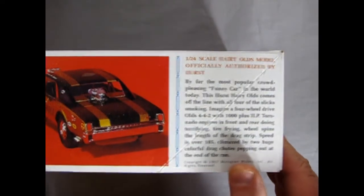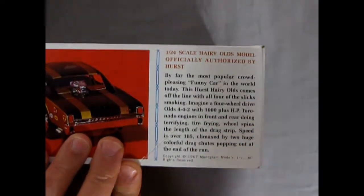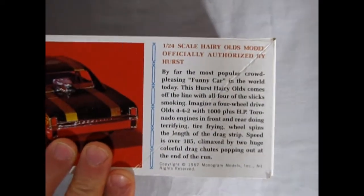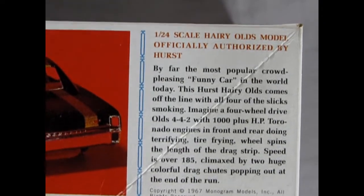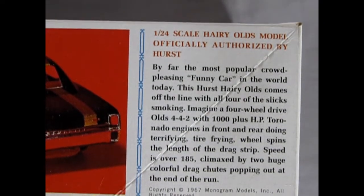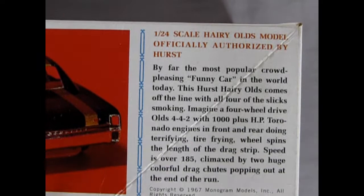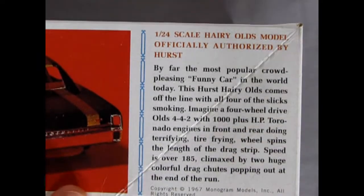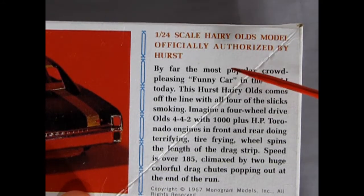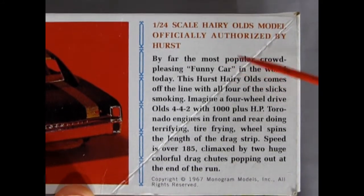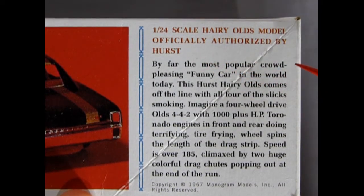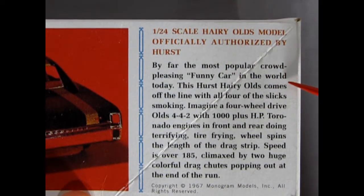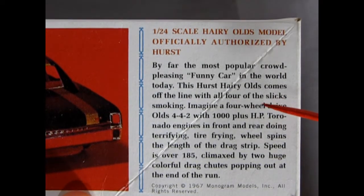So this being a Monogram kit of course is molded in 1:24 scale. Let's just crank in on the box right up here where we can read in more detail with our red pointer stick. 1:24 scale Hurst-Harry-Olds model officially authorized by Hurst. Of course they made shifter levers and all that kind of stuff back in the day. By far the most popular crowd-pleasing funny car in the world today, in 67.